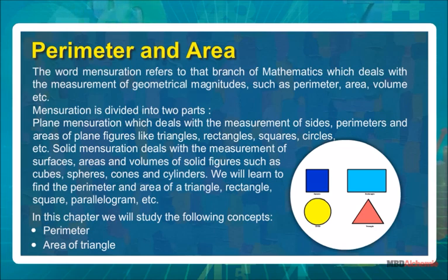Mensuration is divided into two parts. Plane mensuration deals with the measurement of sides, perimeters, and areas of plane figures like triangles, rectangles, squares, circles, etc.